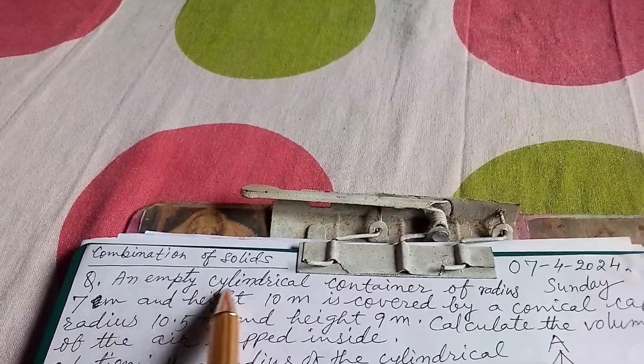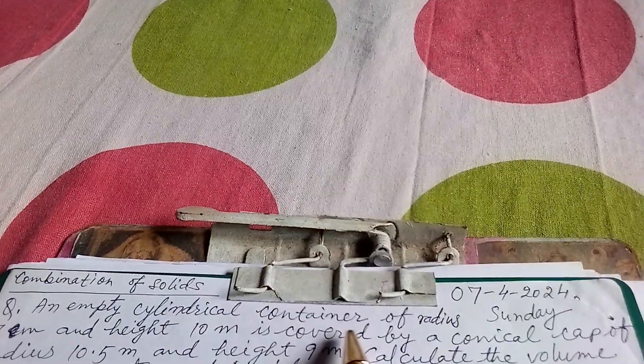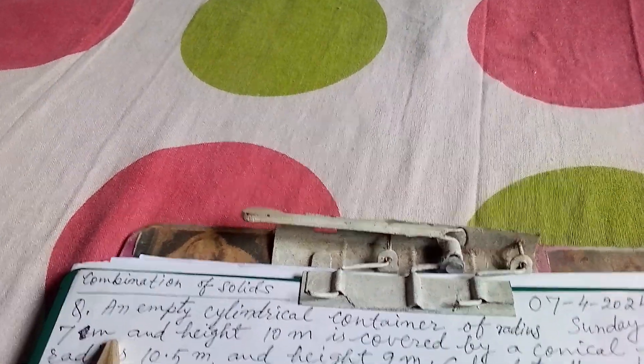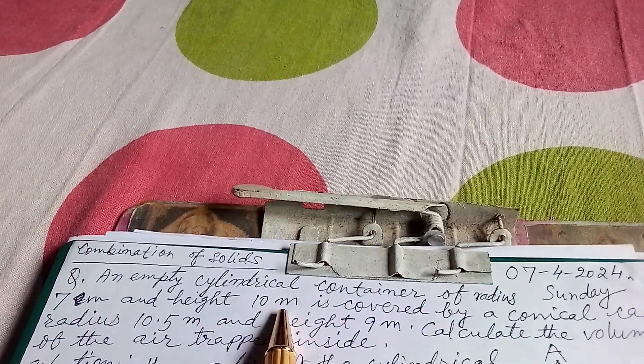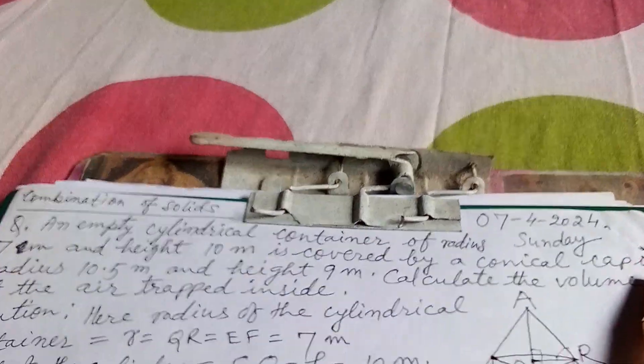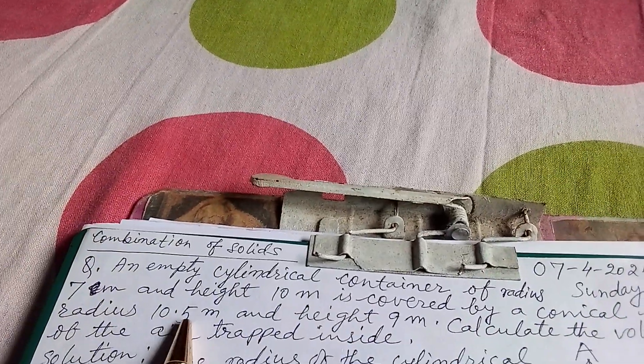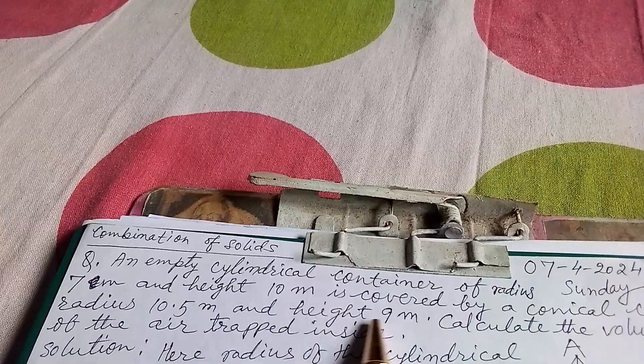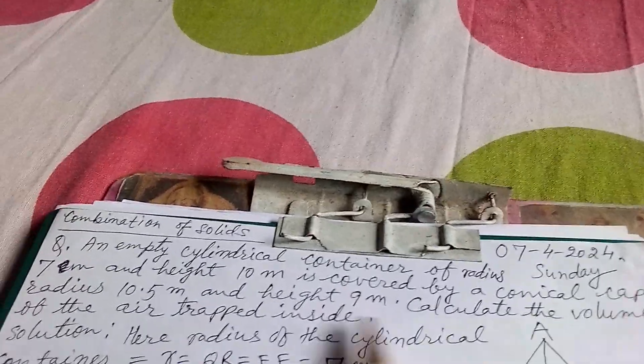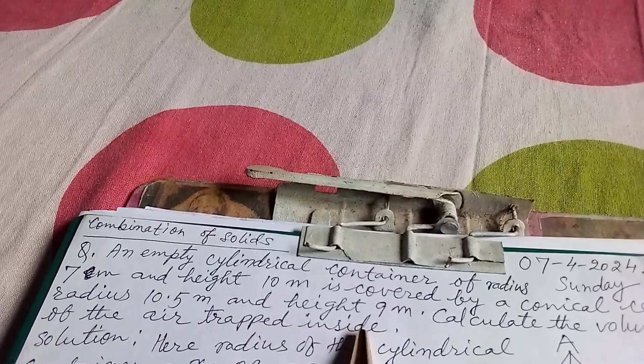The question is: an empty cylindrical container of radius 7 meter and height 10 meter is covered by a conical cap of radius 10.5 meter and height 9 meter. Calculate the volume of the air trapped inside.